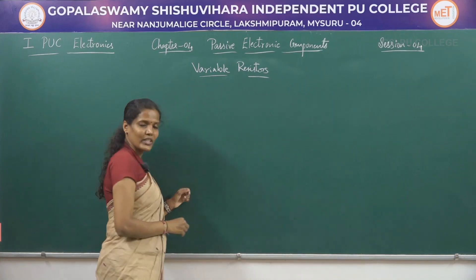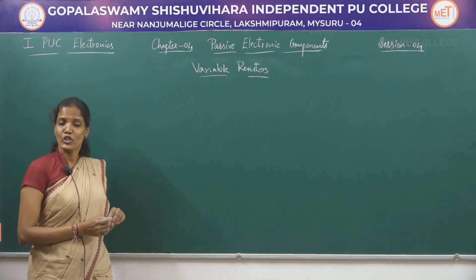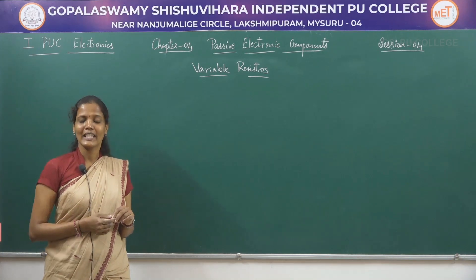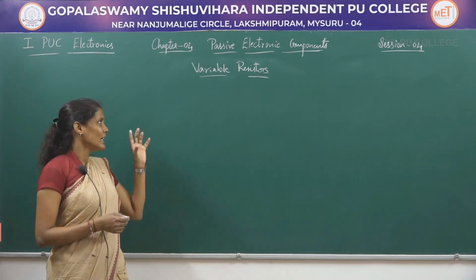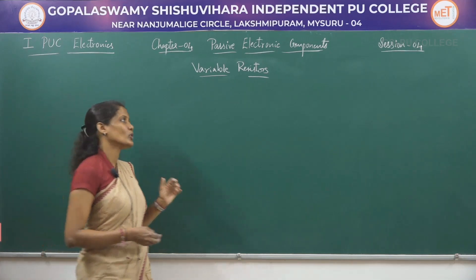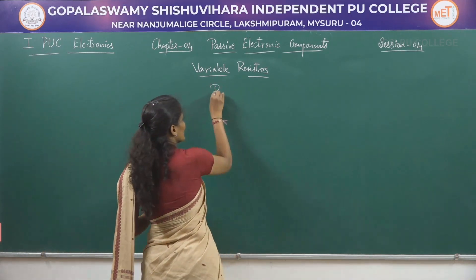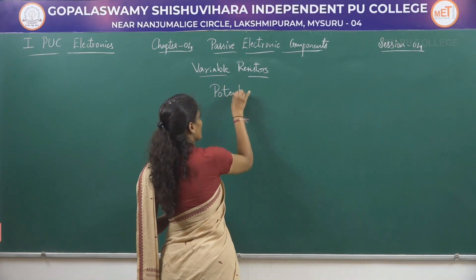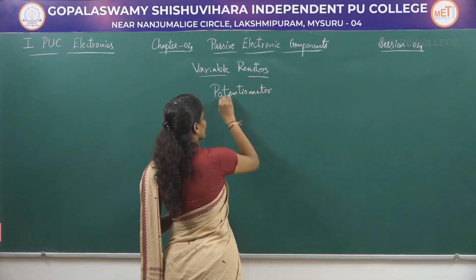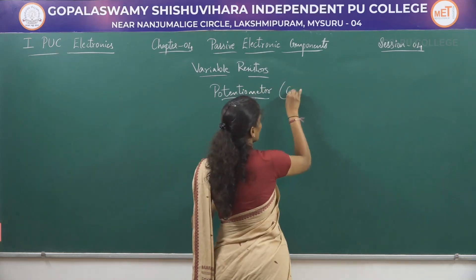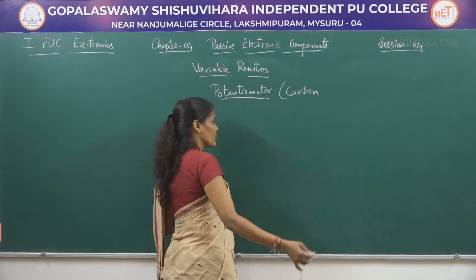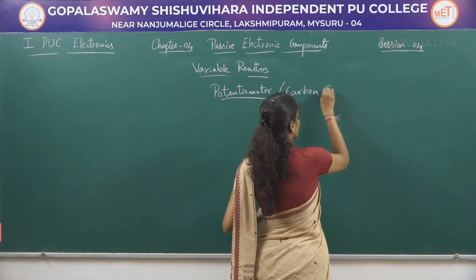Under variable resistors we have three different types: potentiometer, preset, and rheostat. You are going to see the rheostat in the physics lab. In today's session we will be seeing the potentiometer. Potentiometer is one type of a variable resistor, and it can be called as the carbon composition type of variable resistor.